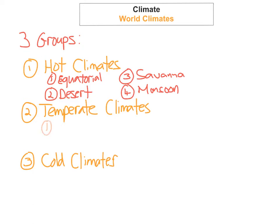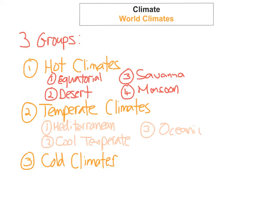In a temperate climate you have Mediterranean, the second one is cool temperate, and the last one is oceanic. For the cold climates we've got two: the first one is called boreal climate and the second one is tundra.